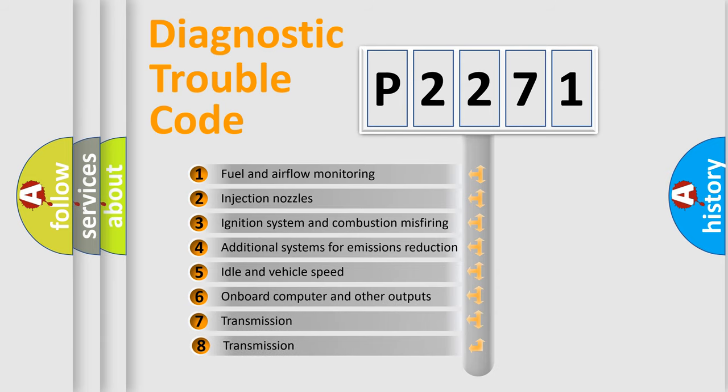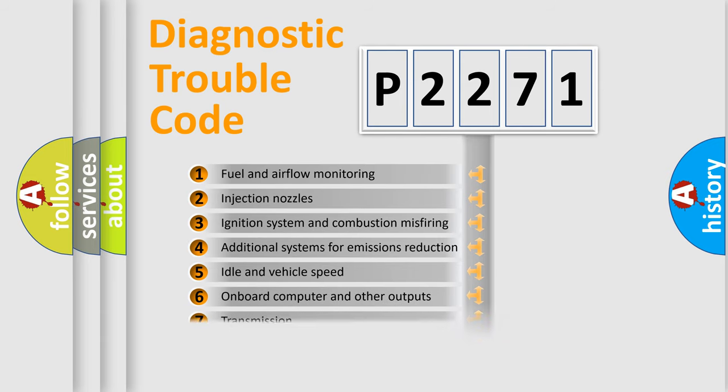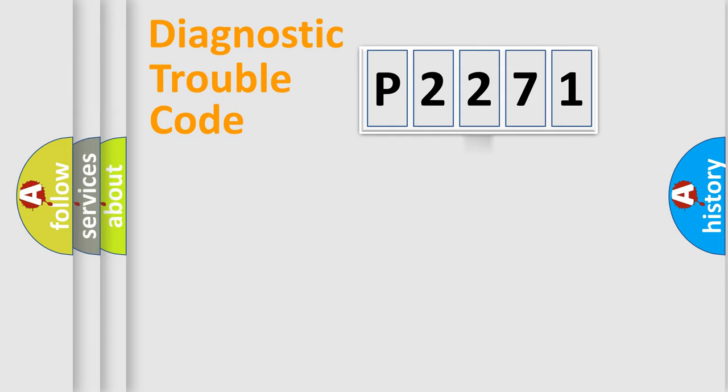The third character specifies a subset of errors. The distribution shown is valid only for the standardized DTC code.